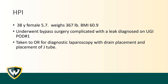This is a 38-year-old female, 5'7", weighing 367 pounds, with a BMI of 60.9. She had a Roux-en-Y bypass that was complicated with a leak, diagnosed on upper GI on post-op day number one. She was taken to the OR for a diagnostic laparoscopy with drain placement and placement of a J-tube distal to the JJ anastomosis.